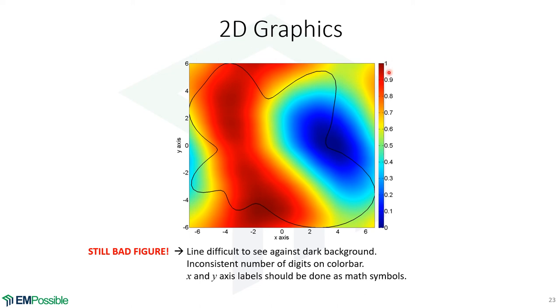On the color bar, inconsistent number of digits. It really should have a 1.0 here because it's going to take somebody's eyes, just that extra half second to realize that the order of magnitude of the numbers here is offset. And notice Y and X, they're actually variables. Those should be italicized. Axis should not, but X and Y should be italicized. So we have to worry about the formatting.